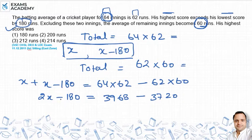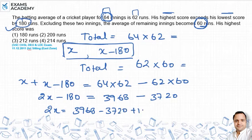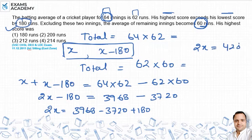इस minus 180 को इस side ले जाएंगे तो plus हो जाएगा, it means 2x कितने के बराबर आने वाला है: 3968 minus 3720 plus 180. इसको simplify करते हैं, तो 2x की value निकल के आती है 428 के बराबर.